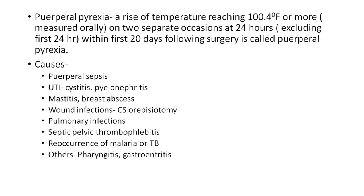The causes of puerperal pyrexia include puerperal sepsis, UTI that may be cystitis or pyelonephritis, mastitis, breast abscess, wound infection from CS or episiotomy, pulmonary infection, septic pelvic thrombophlebitis, reoccurrence of malaria or TB, and others like pharyngitis or gastroenteritis.